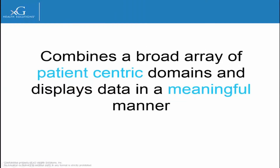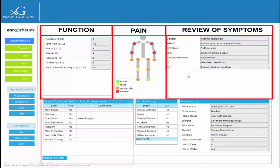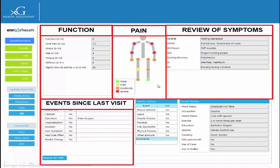It combines a broad array of patient-centric domains: functional status, pain distribution, review of symptoms, and events since last visit. This is an important table since much of this information is not consistently collected today, and many of these events are not in any given EHR since they may have occurred at another facility.